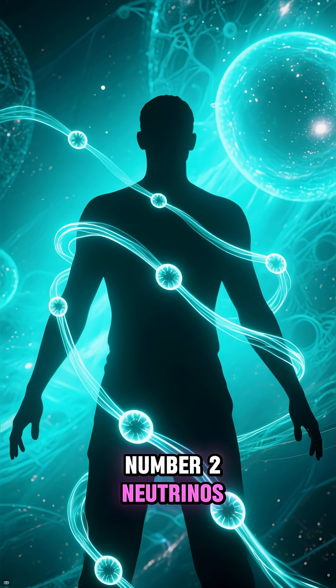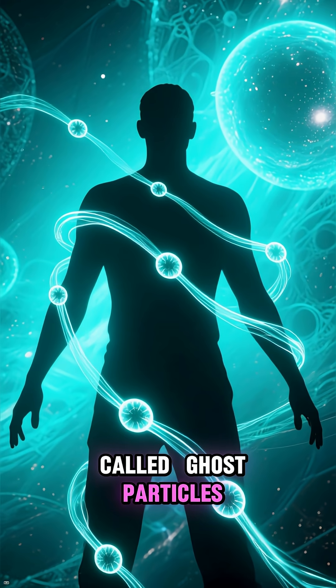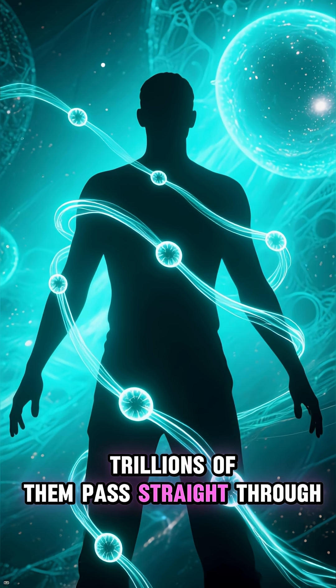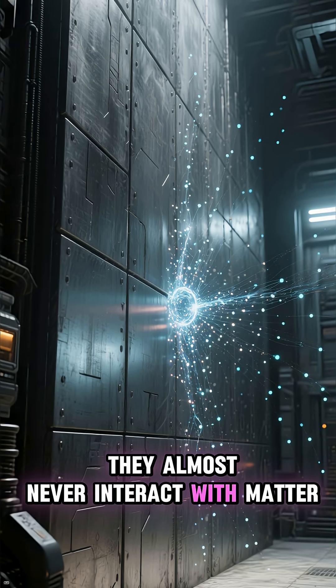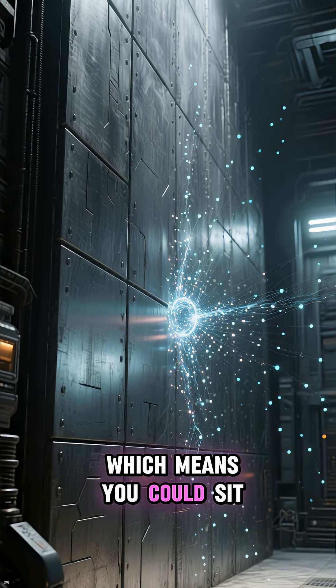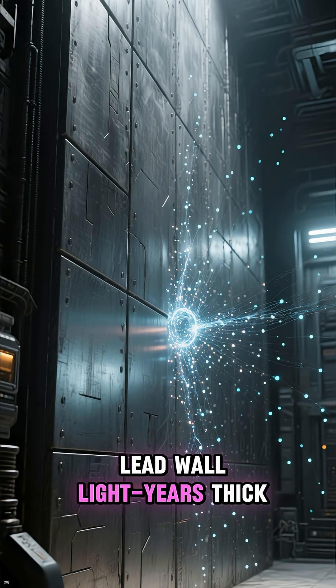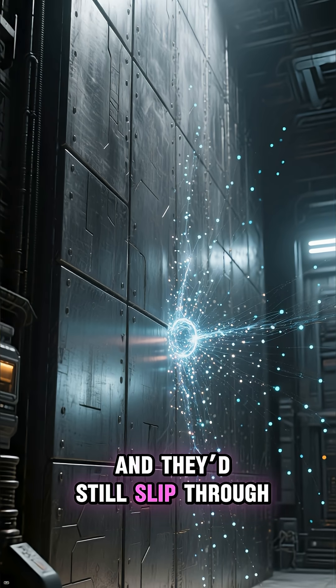Number 2: Neutrinos. Called ghost particles, trillions of them pass straight through your body every second. They almost never interact with matter, which means you could sit in a lead wall light years thick, and they'd still slip through.